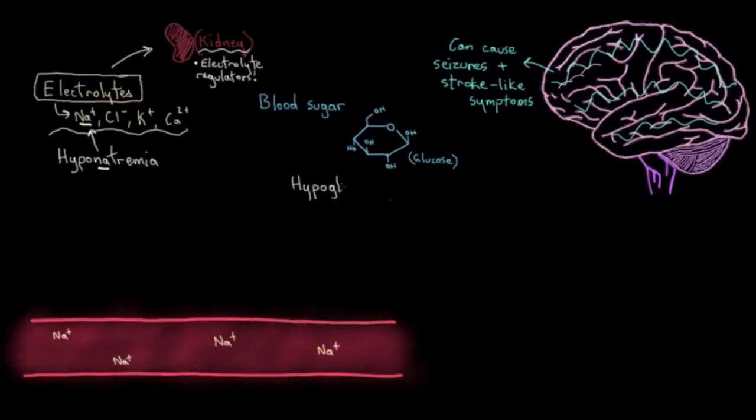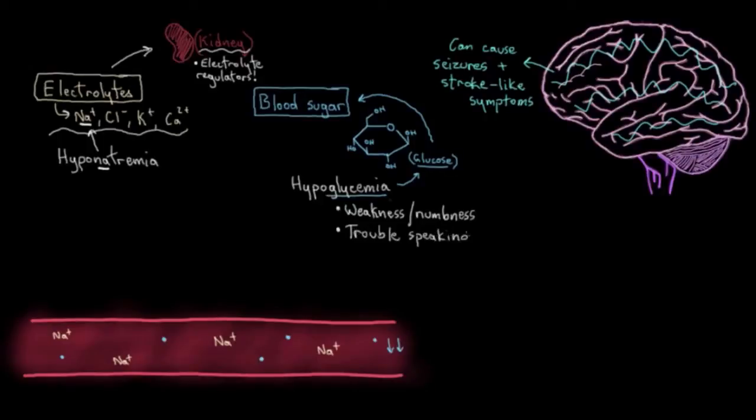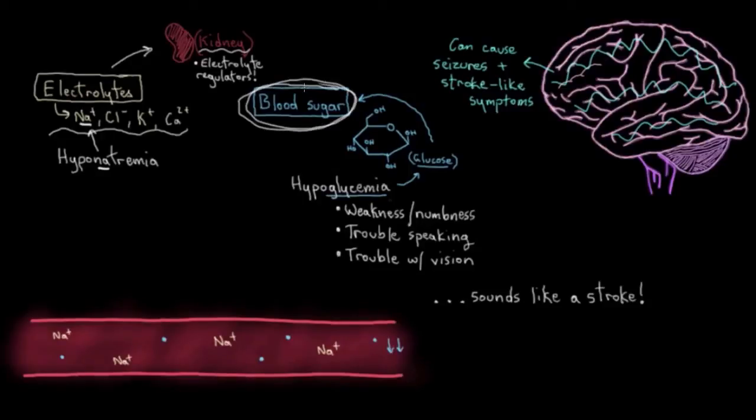Hypoglycemia, or blood sugar that's way too low—glycemia refers to glucose, which is blood sugar—can also look like a stroke. It can even result in symptoms like weakness or numbness on one side of the body, or trouble speaking and vision problems. Sounds familiar, right? It sounds a lot like a stroke, so it's important to get blood sugar checked so that if it is just a hypoglycemic event, that can be corrected and stroke can be ruled out. The glucose check can also give you an idea of whether the patient has diabetes, which increases your risk of stroke.